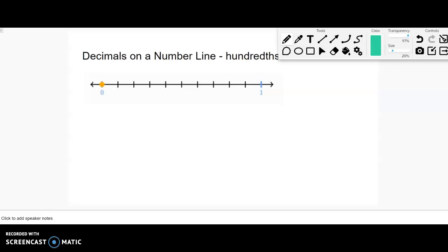So this one we start at zero, we go to one. It's important to look at where we are. Now let's look at how many pieces it's divided up into: one, two, three, four, five, six, seven, eight, nine, ten. So we're dividing it into tenths.